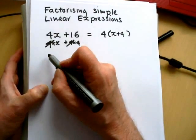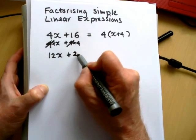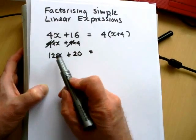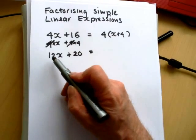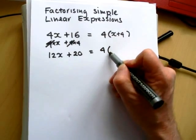I'll give you one similar, but I'll show you a different way of doing it. Suppose I had 12x plus 20. Again, I'm in the 4 times tables. I know that 4 goes into 12 and 4 goes into 20, so that goes on the outside.